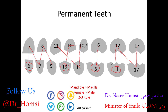Generally, teeth in females erupt earlier than those same teeth in males. In both males and females, tooth eruption should occur symmetrically in both jaws — so if the lower left first premolar is erupting, the lower right first premolar should also be erupting or close to it. Finally, the two-thirds rule: teeth normally erupt when two-thirds of their root has developed, and then the root takes about two to three more years after the initial eruption to complete its development.